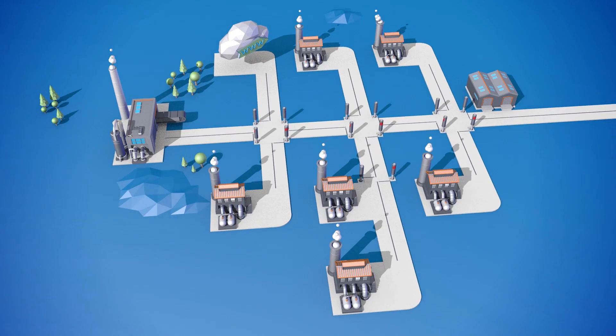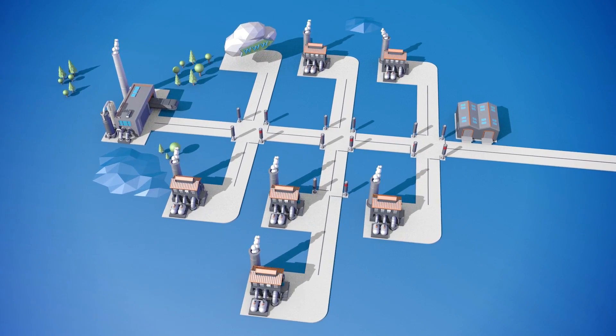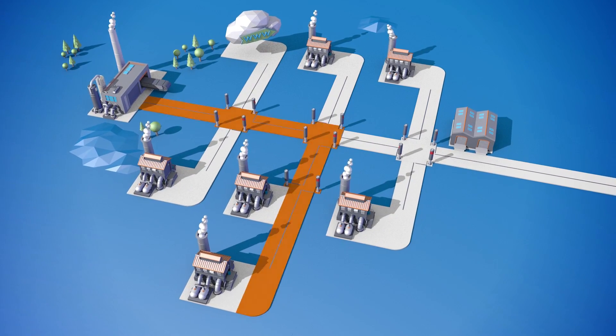Profibus mainly uses a line structure. Profinet, in contrast, applies a mixture of star, tree, line, and ring structures.